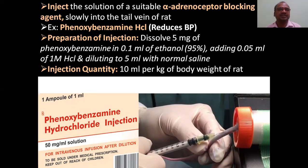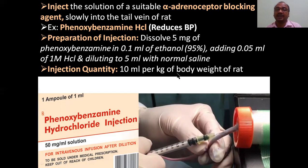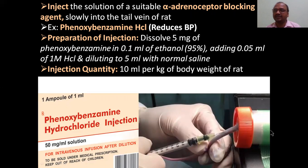To prepare phenoxybenzamine HCl: use 0.1 ml of ethanol and 1 ml of 1 molar HCl, diluting to 5 ml with normal saline. The injection quantity is 10 ml per kg of the body weight of the rat. You give it slowly by injection into the tail vein. The rat is held inside a pipe so you can access only the tail.